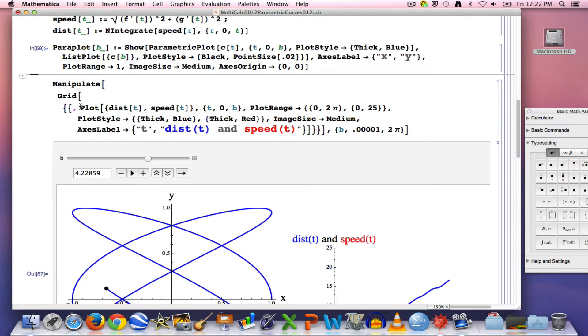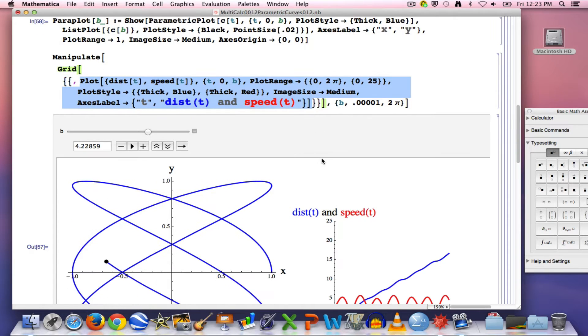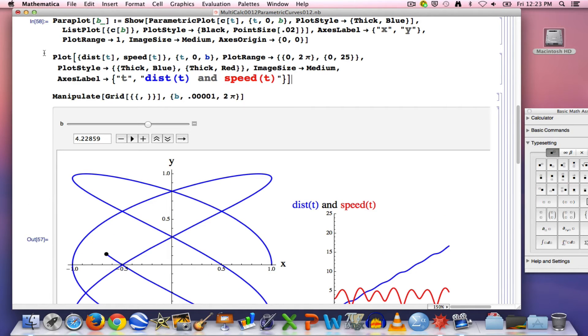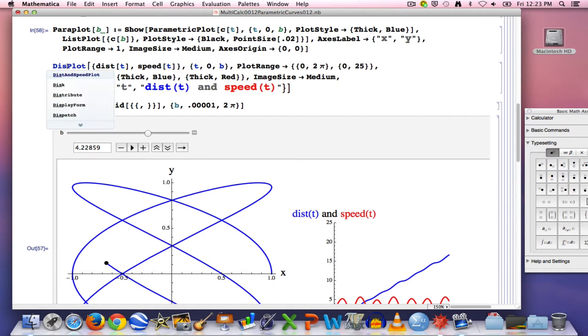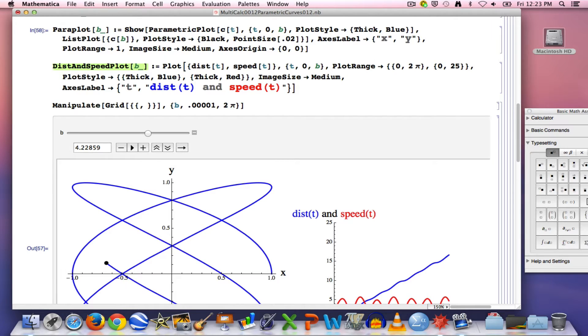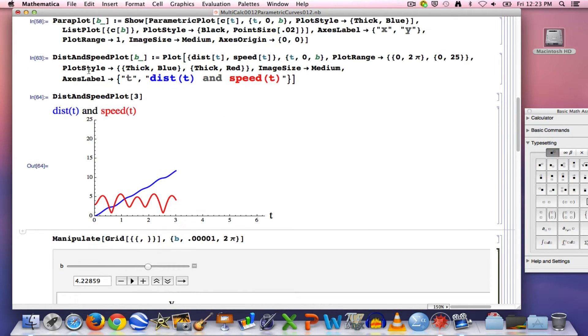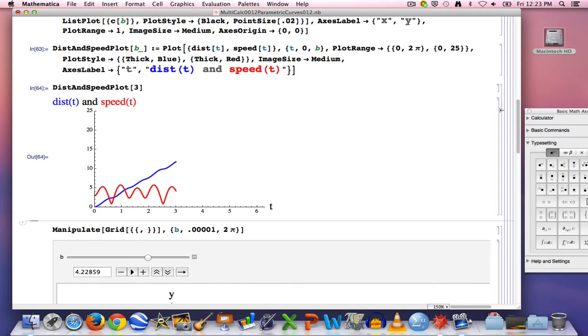I'm going to do something similar with this other part of the plot here inside grid. This code right here generates the graph on the right of the distance and speed graphs. I'm going to cut that out, paste it up here, and give it a name as well. I'll call it dist and speed plot of b. And likewise, I can enter that, plug in a specific value b like 3, and see the graph of those functions when b is 3 right here. It's a snapshot of the animation.